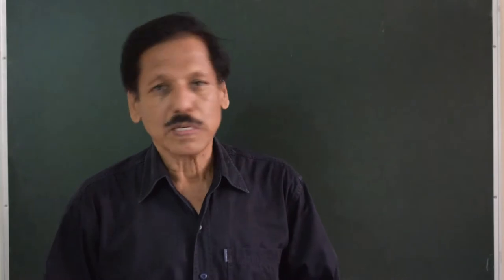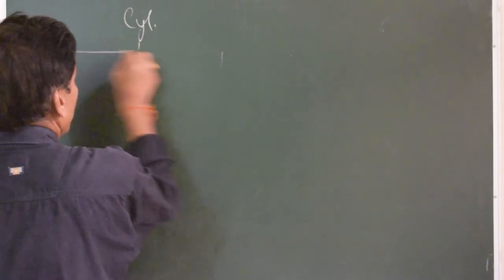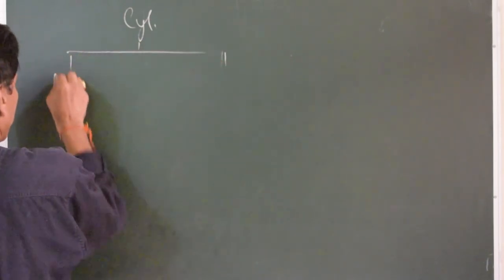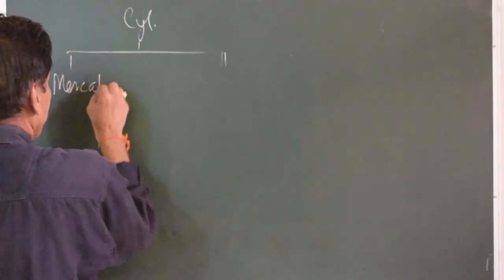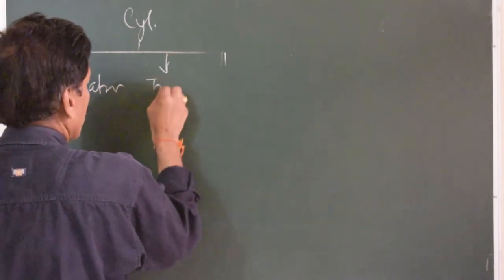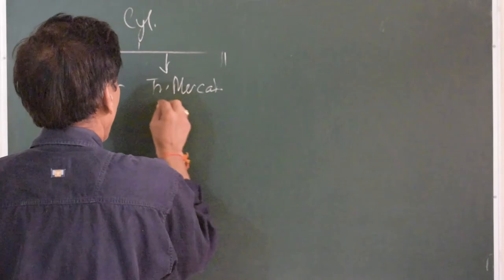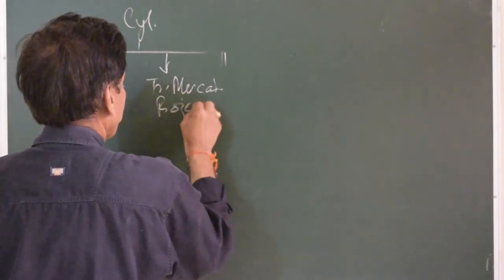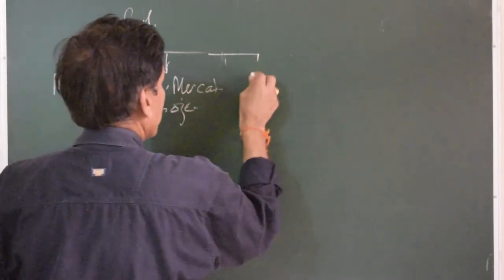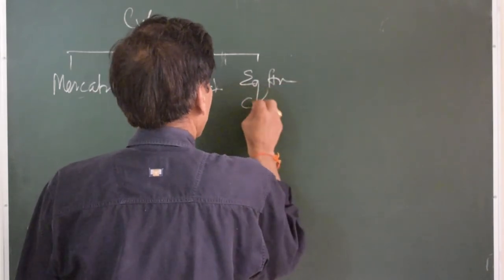Hello, this is Captain Chowdhury. I will be speaking about cylindrical projection. The most commonly used cylindrical projection is Mercator projection. The second known projection is transverse Mercator projection, and then there is equal area cylindrical projection.